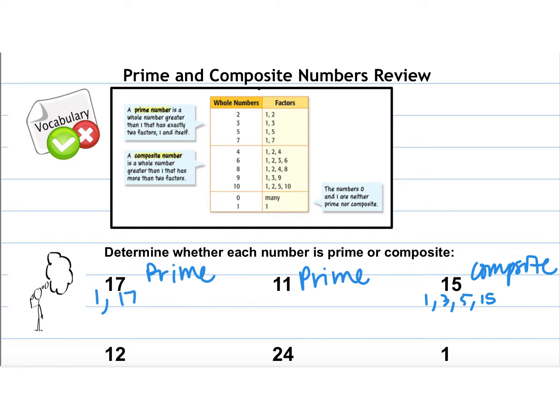12 — factors are 1, 2, 3, 4, 6, and 12, so it's a composite number. I'm just going through this quickly since it is a review. 24 has lots of factors: 1, 2, 3, 4, 6, 8, 12, and 24, so therefore it is composite.